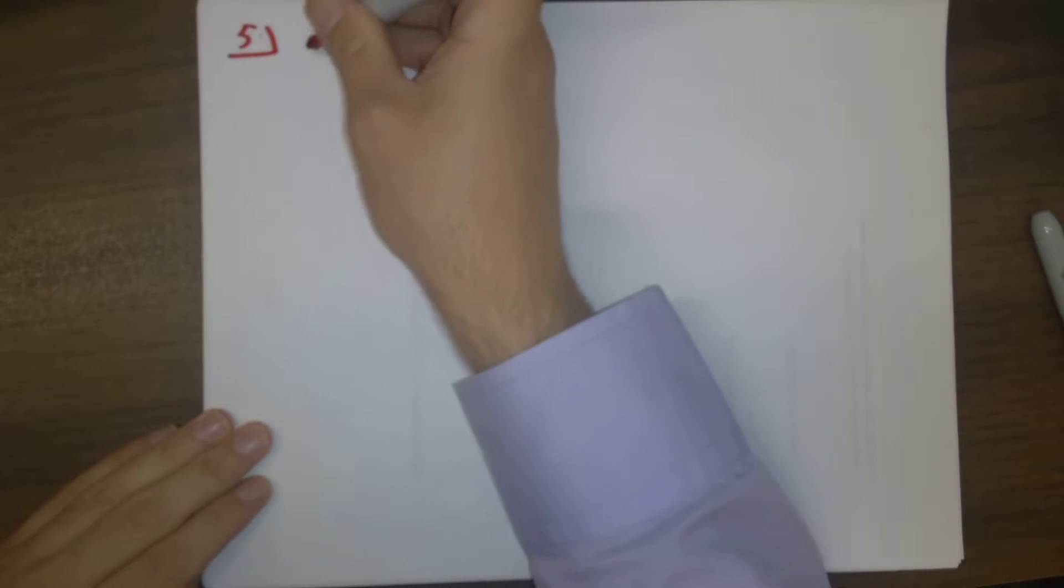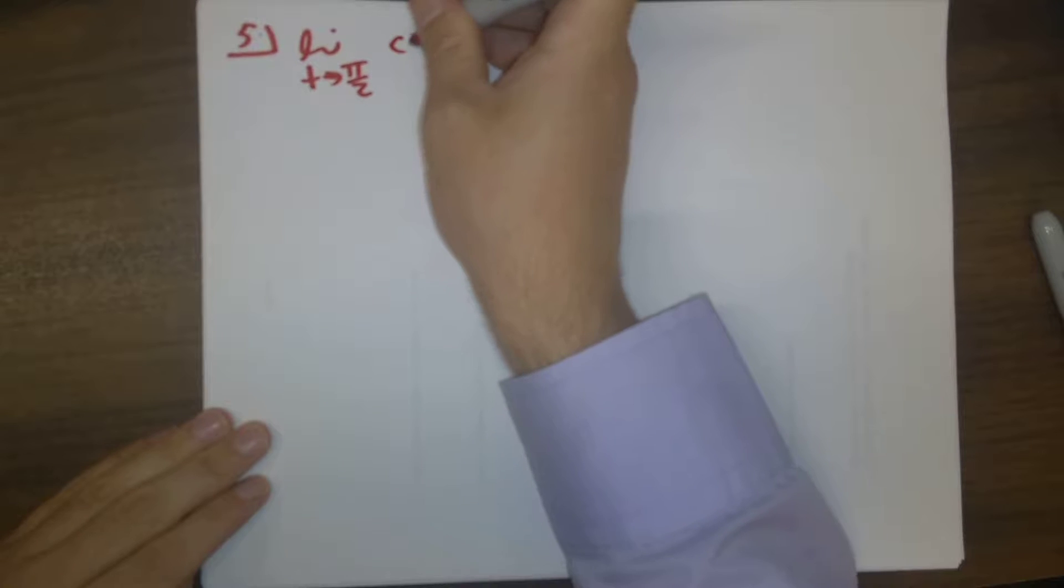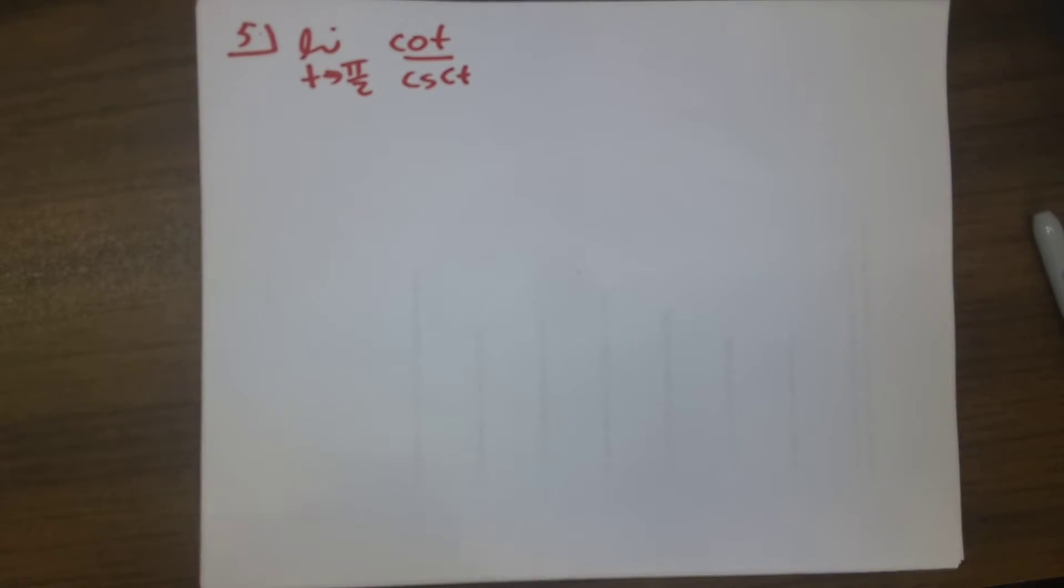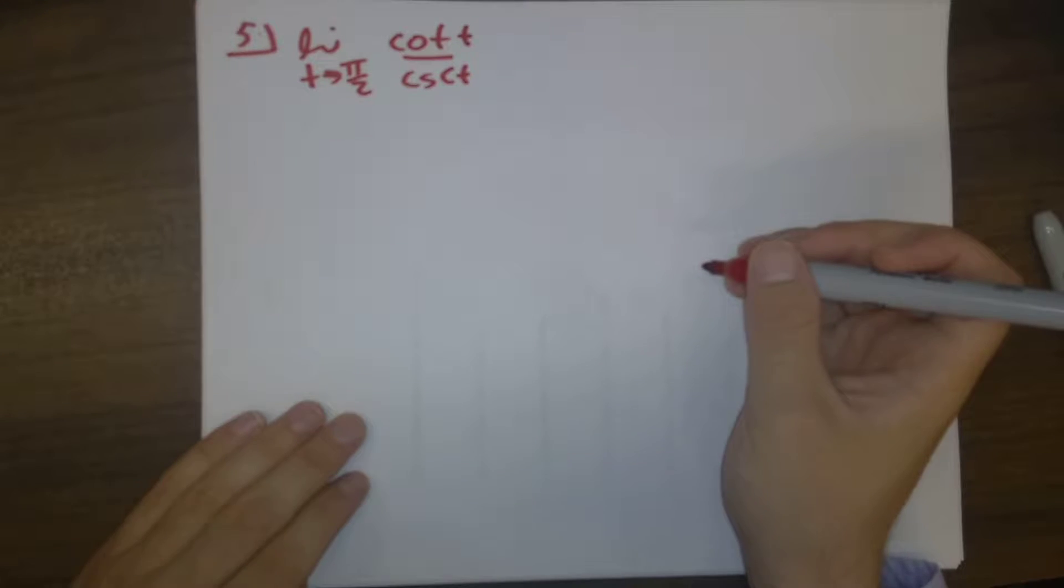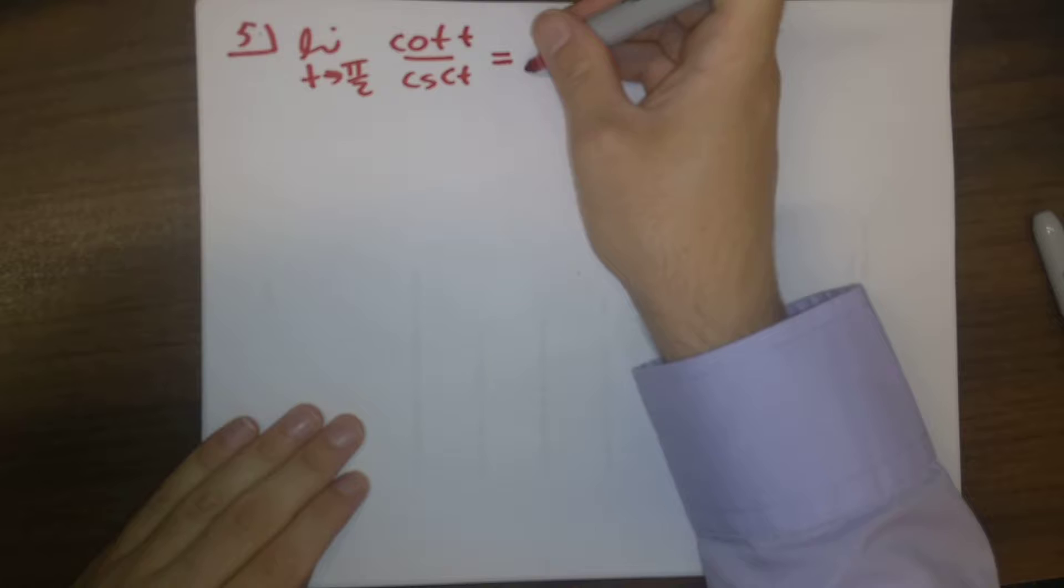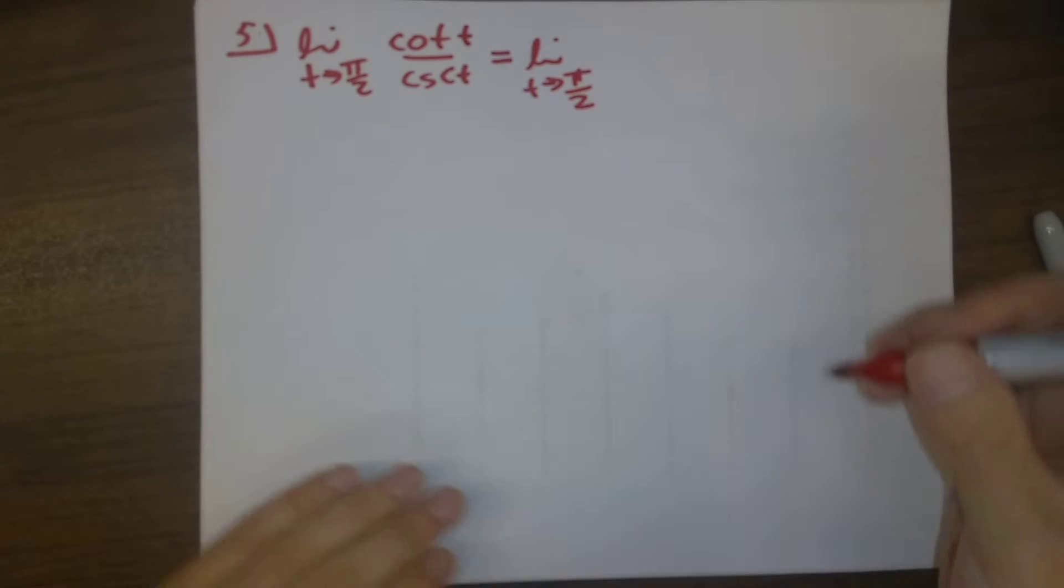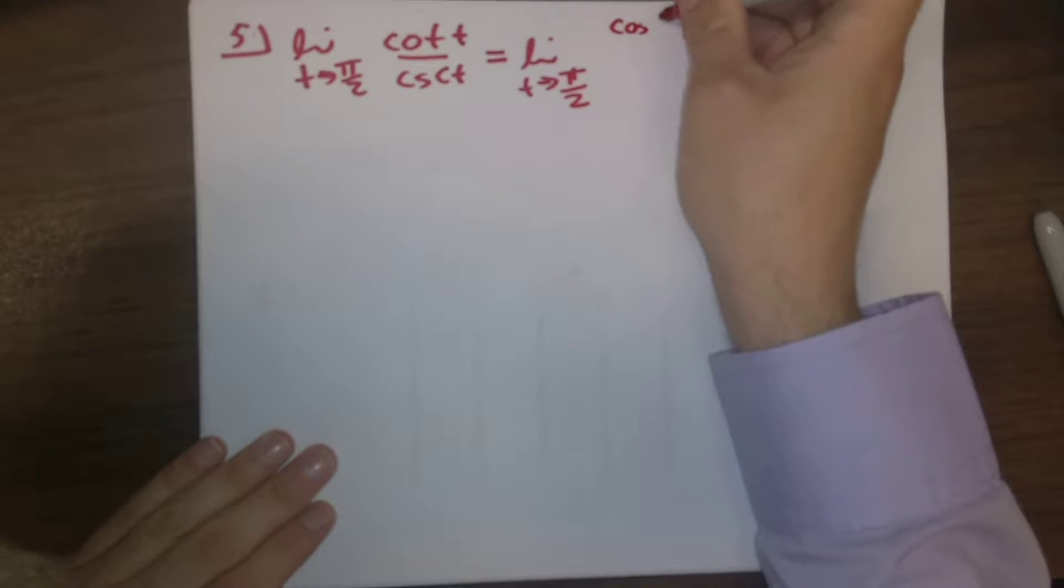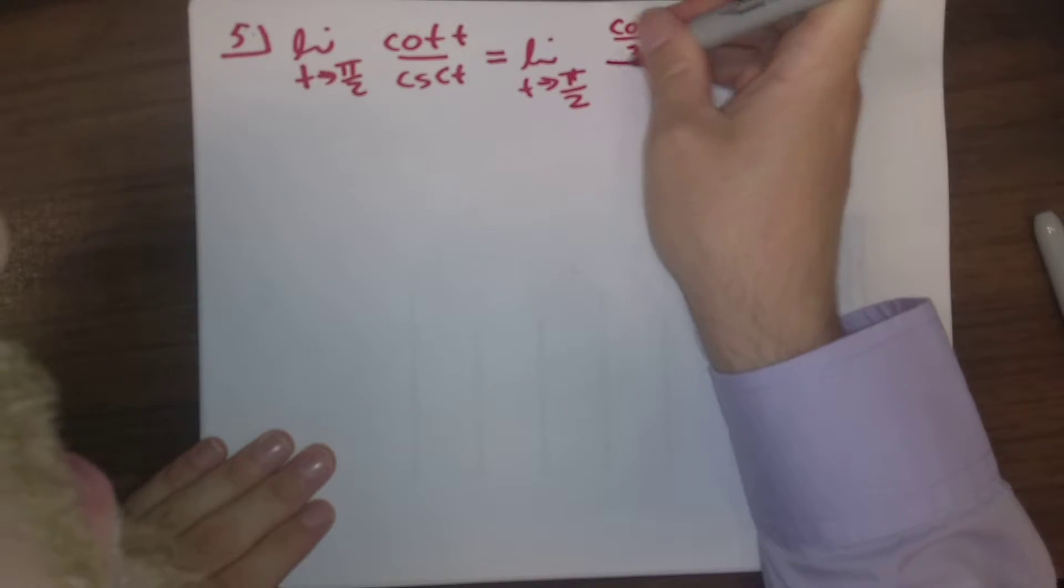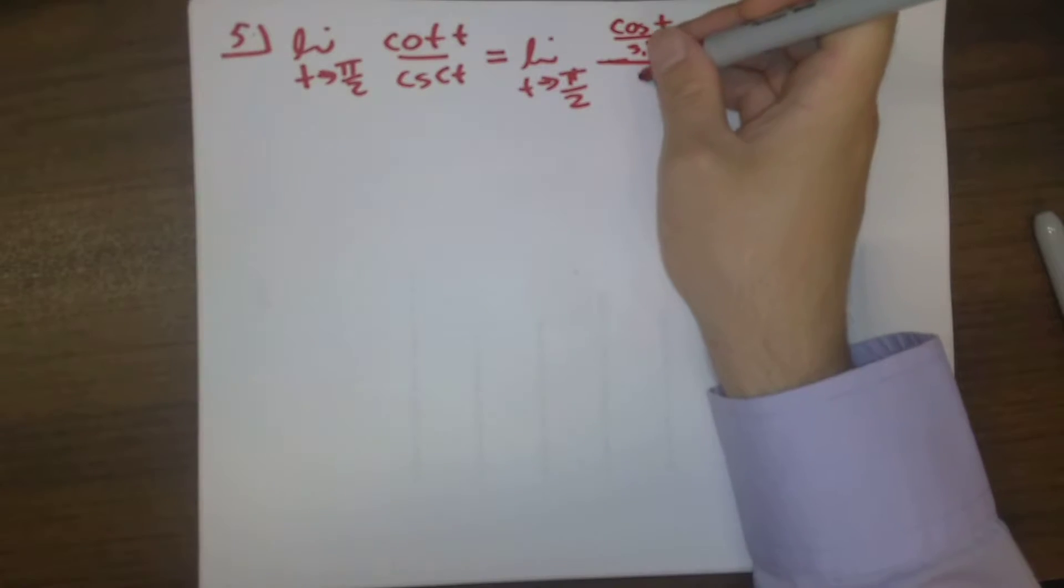Number five was the limit as t goes to pi over two of cotangent t over cosecant t. The most natural thing to do is we should be much more comfortable with sines and cosines than cotangents and cosecants. So cotangent is cosine over sine, and all of that is over cosecant which is one over sine.